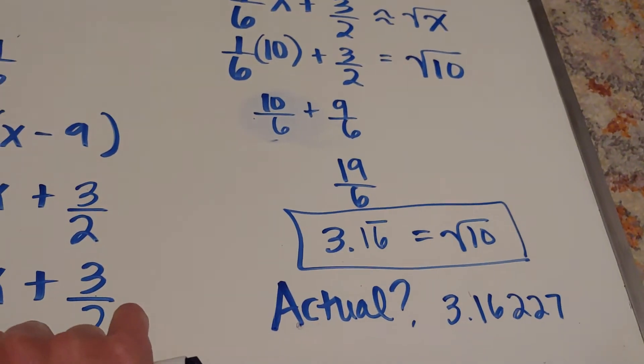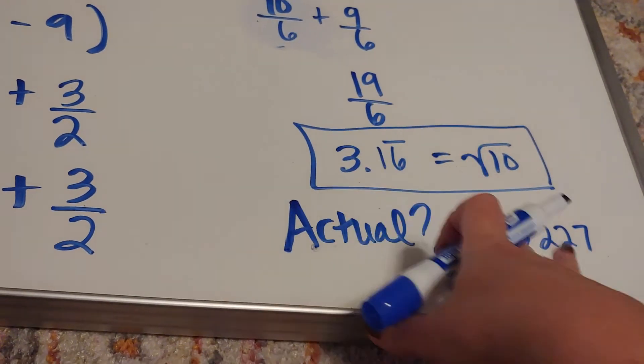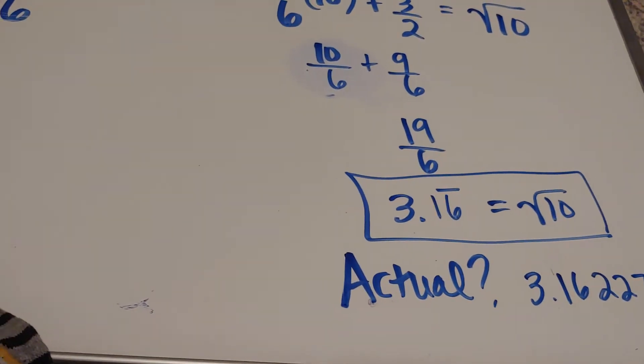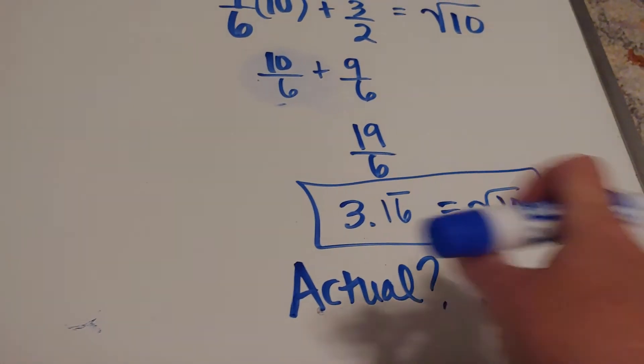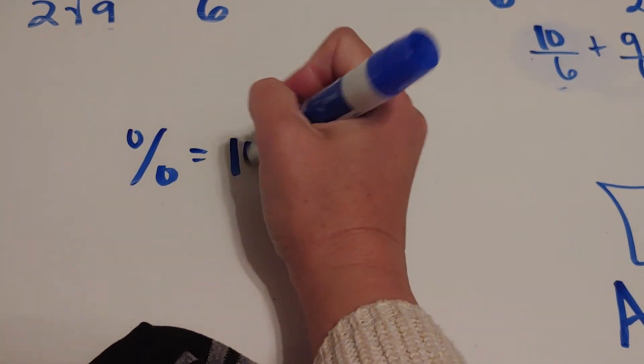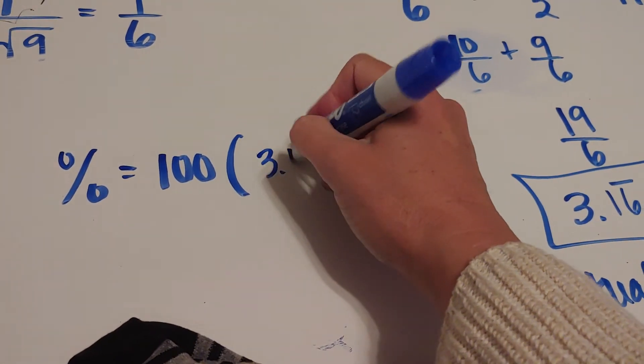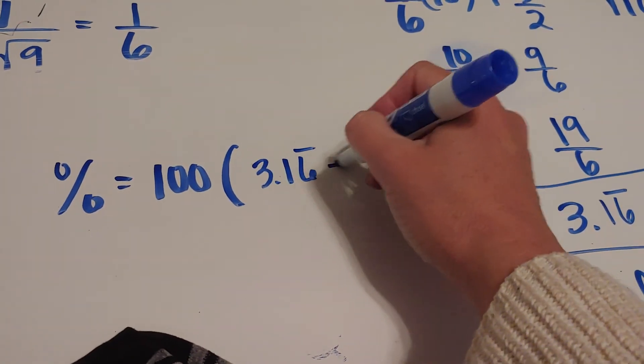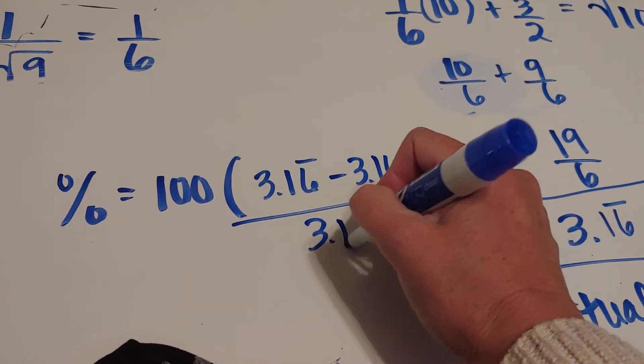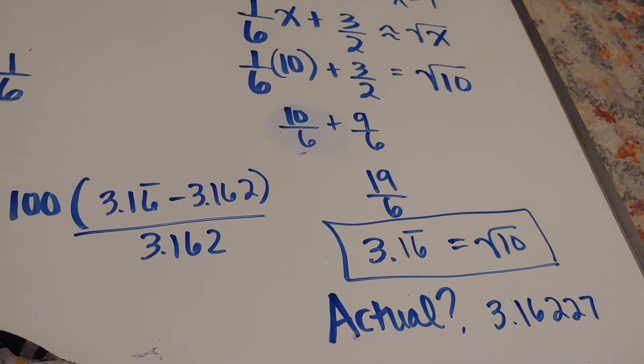Now in your homework, it'll ask you to figure out the percent error. That's basically saying how close these are to each other. The formula is 100 times your estimate, the 3.16 repeating, minus the actual, divided by the actual. You're going to see that this is ridiculously close.